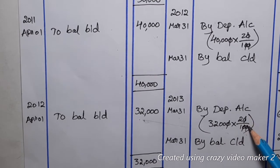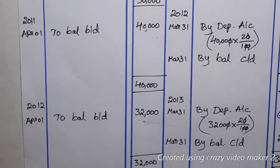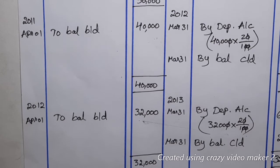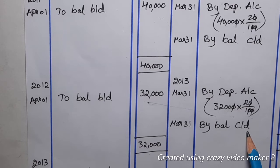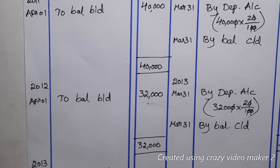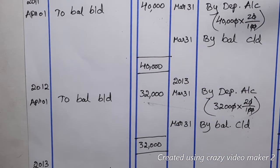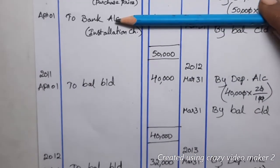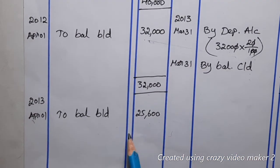20% of ₹32,000 equals ₹6,400 depreciation for Year 3. After totaling and balancing, the closing balance carried down is ₹25,600. This completes the furniture account for the first three years under the diminishing balance method — Year 1, Year 2, and Year 3 are all done.